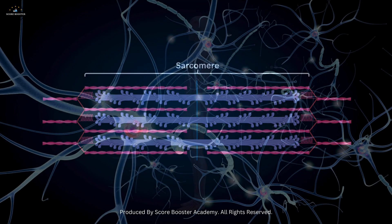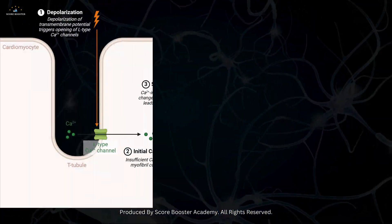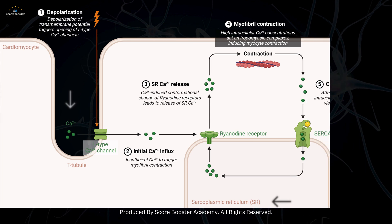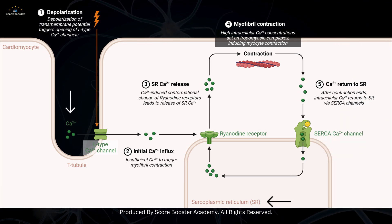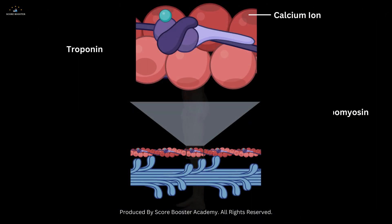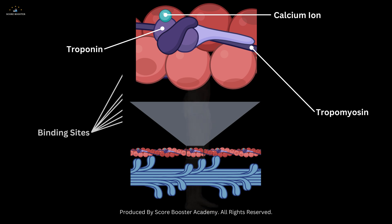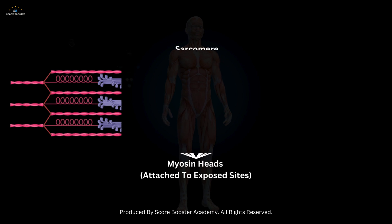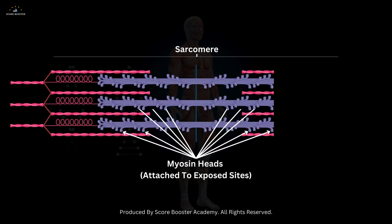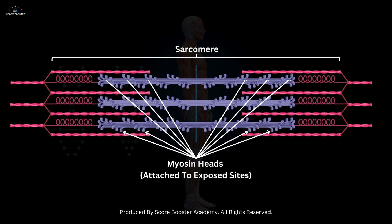It all starts with a nerve impulse that triggers the release of calcium ions from the sarcoplasmic reticulum, a specialized endoplasmic reticulum in muscle cells. These calcium ions bind to troponin, causing tropomyosin to move and expose the myosin binding sites on actin. Myosin heads, energized by ATP, attach to these exposed sites, forming cross-bridges.